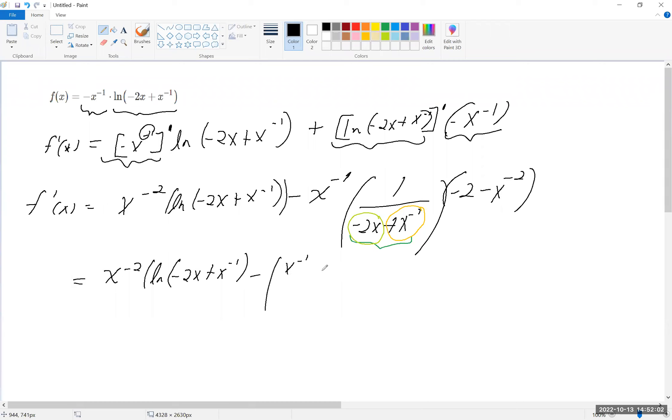So x to the minus 1 over minus 2x plus x to the minus 1. So I'm combining that and multiplying it by that piece. So it's going to be a minus 2. So for now, let's put a minus 2 there.